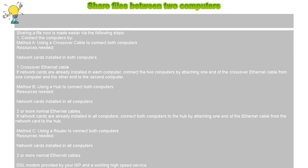Step 3: Select a file or folder that you want to share and highlight it. Step 4: Using your mouse, right-click on the file and hit the option for Sharing and Security. Under the Sharing tab, tick the check boxes beside 'Share this folder on the network' and 'Allow network users to change my files,' which were previously greyed out.